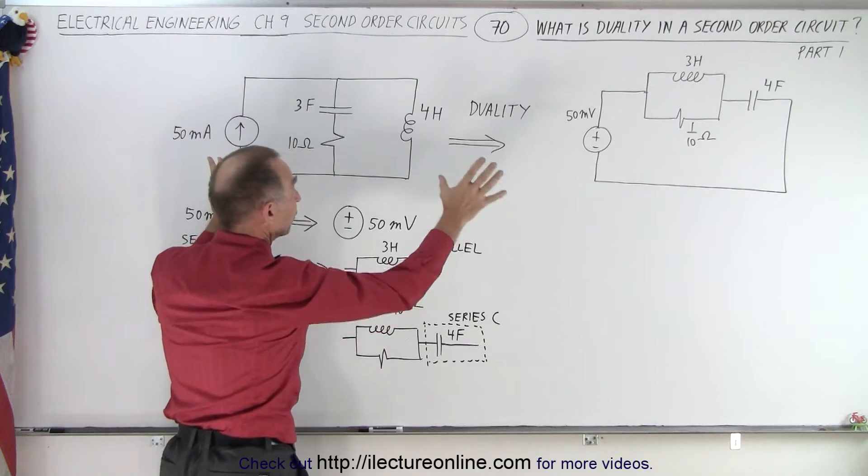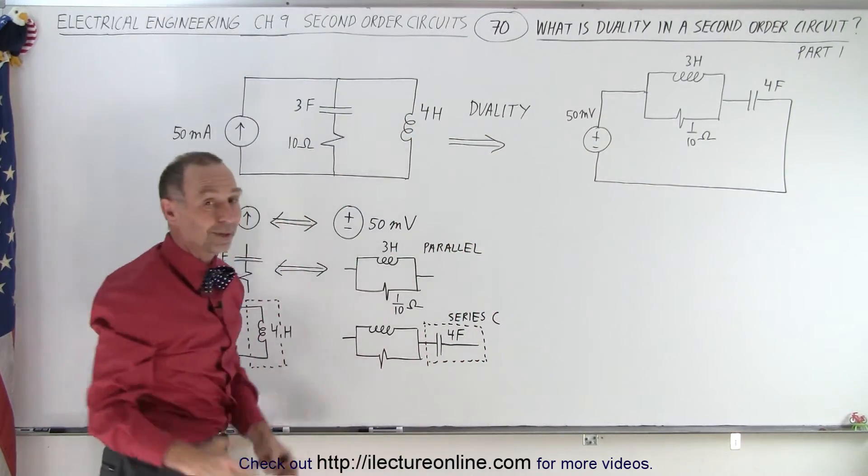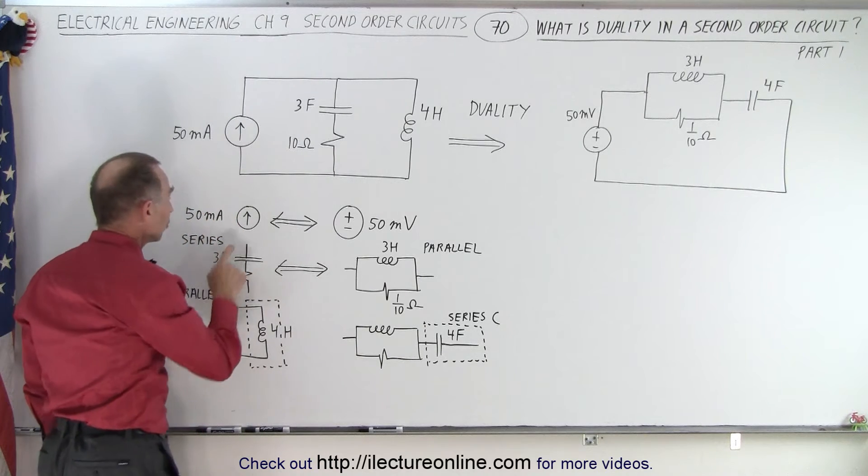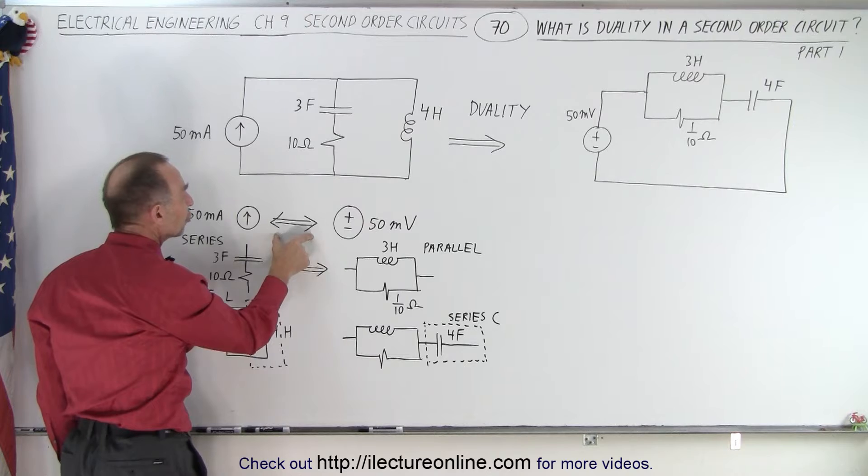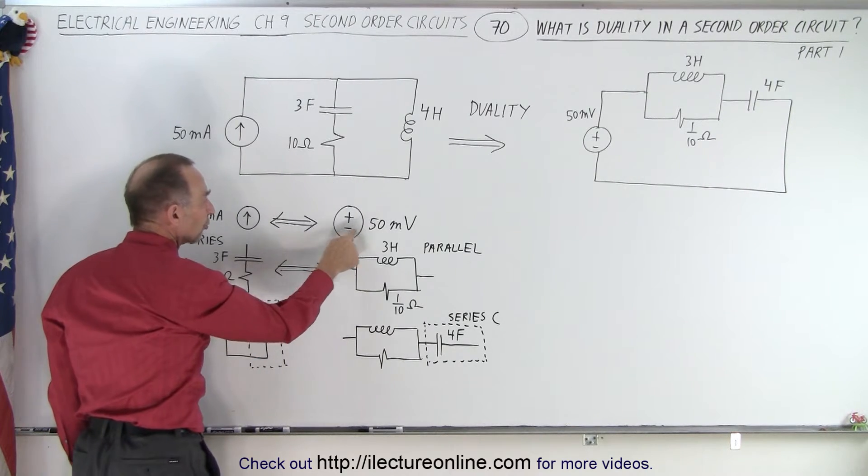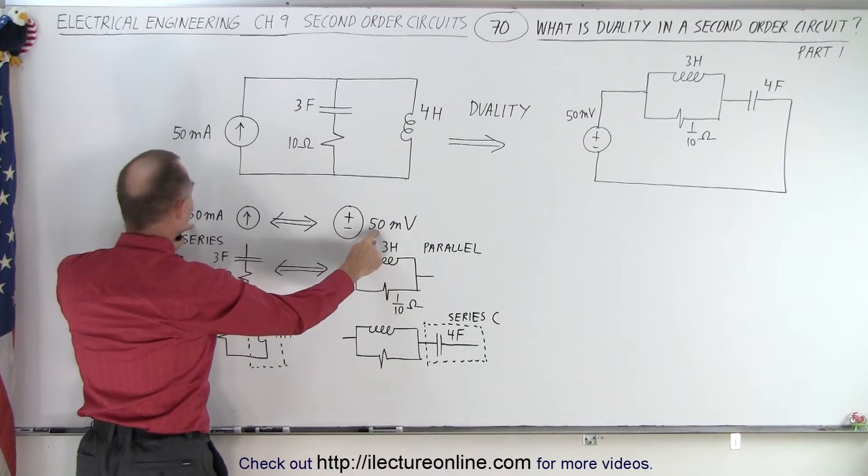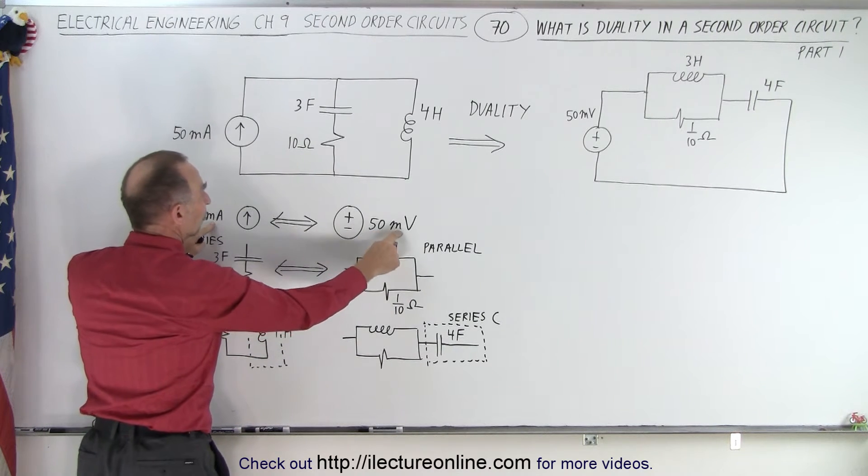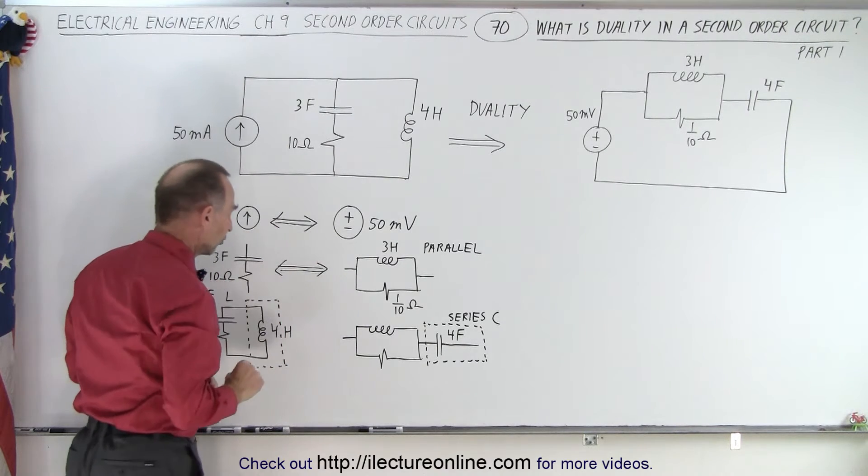These are equivalent circuits. This is a duality of the circuit right here. So in essence what did we do? We took the current source that was 50 milliamps and we said that it was interchangeable with a voltage source of 50 millivolts. So notice that the quantity is the same. We just went from milliamps to millivolts and we changed the current source to a voltage source.